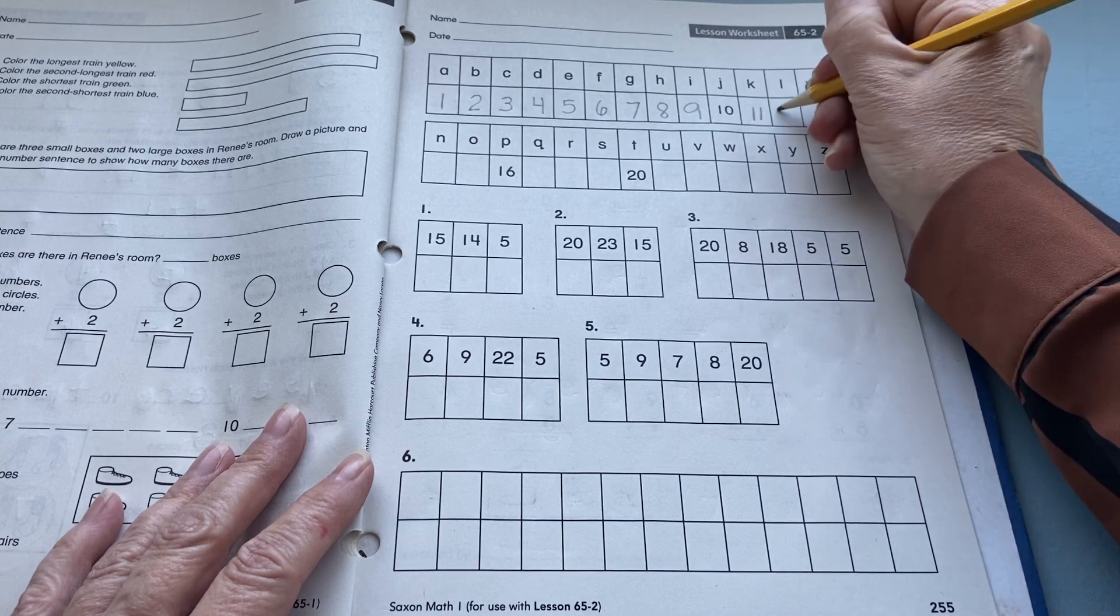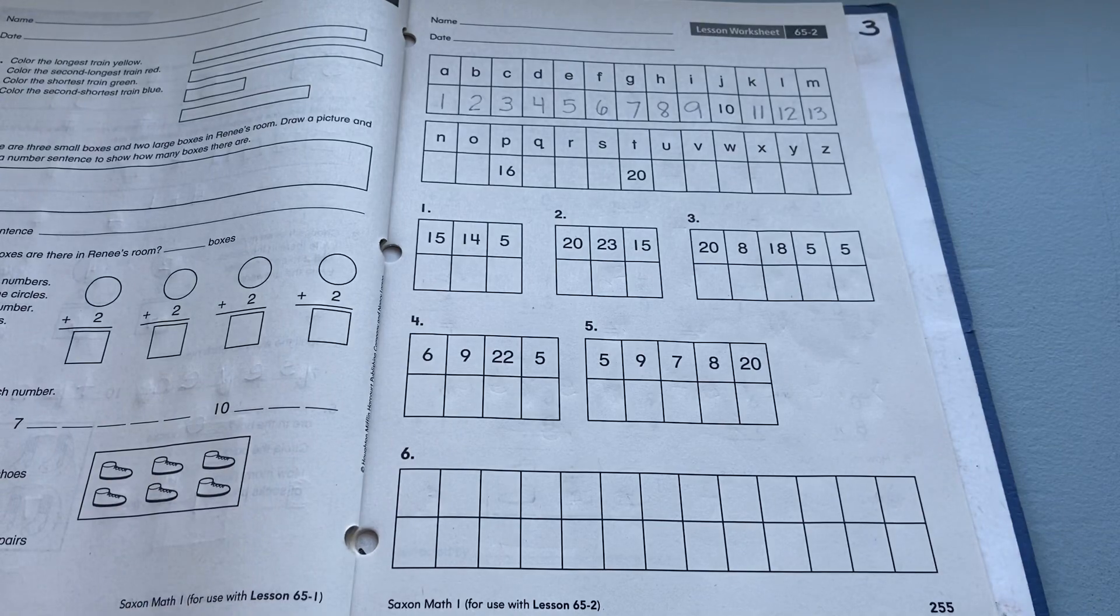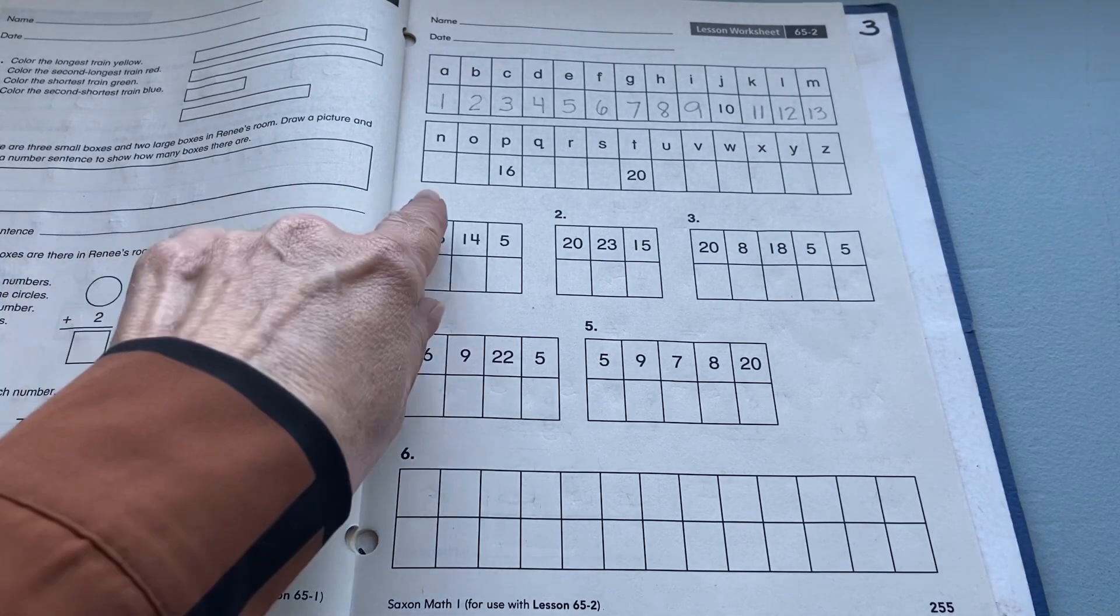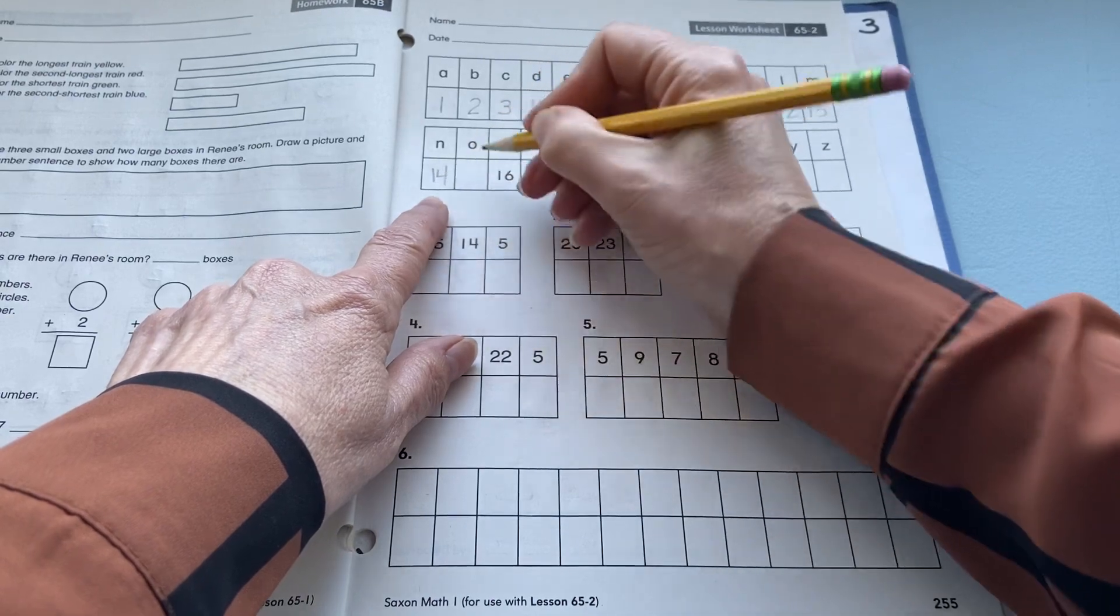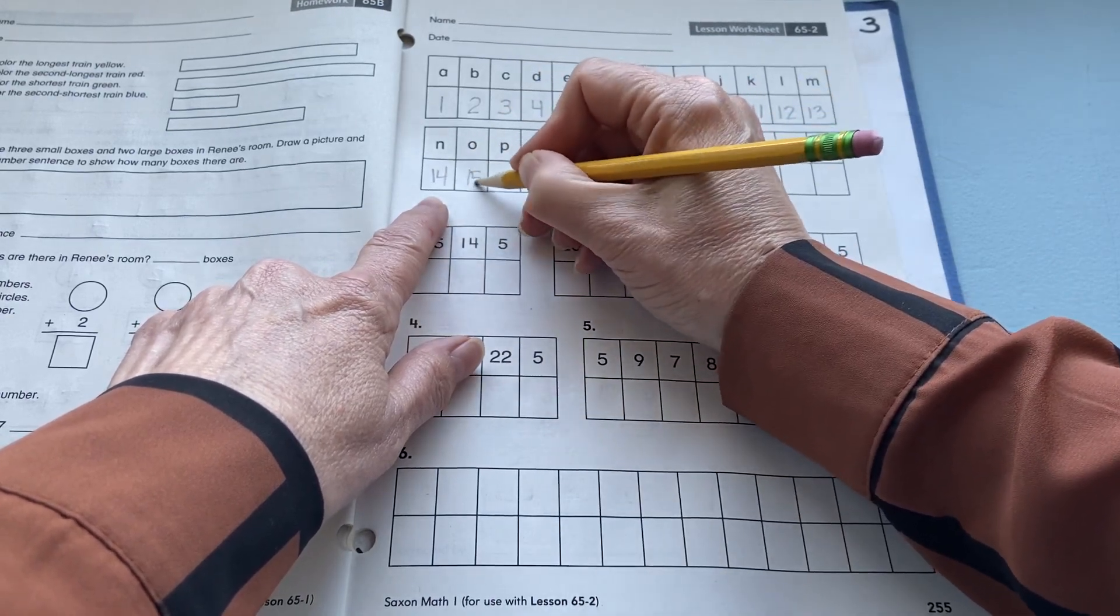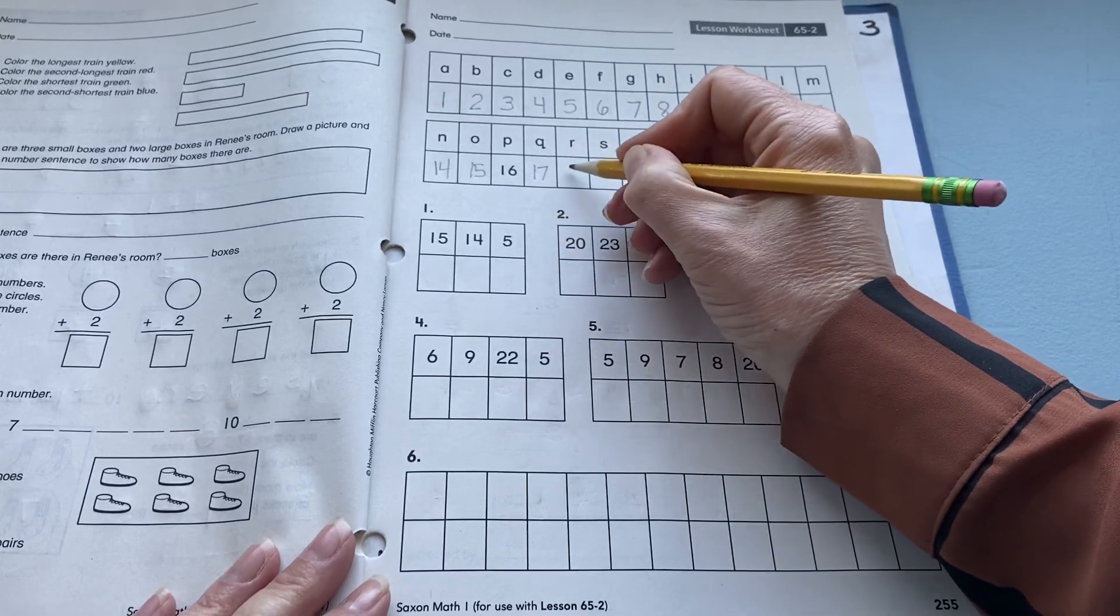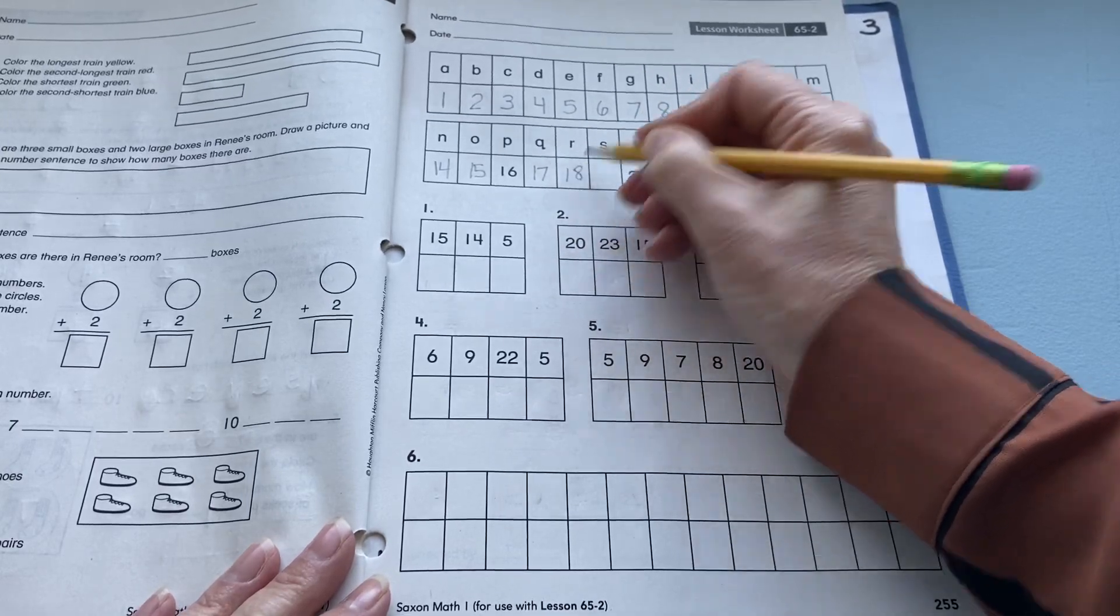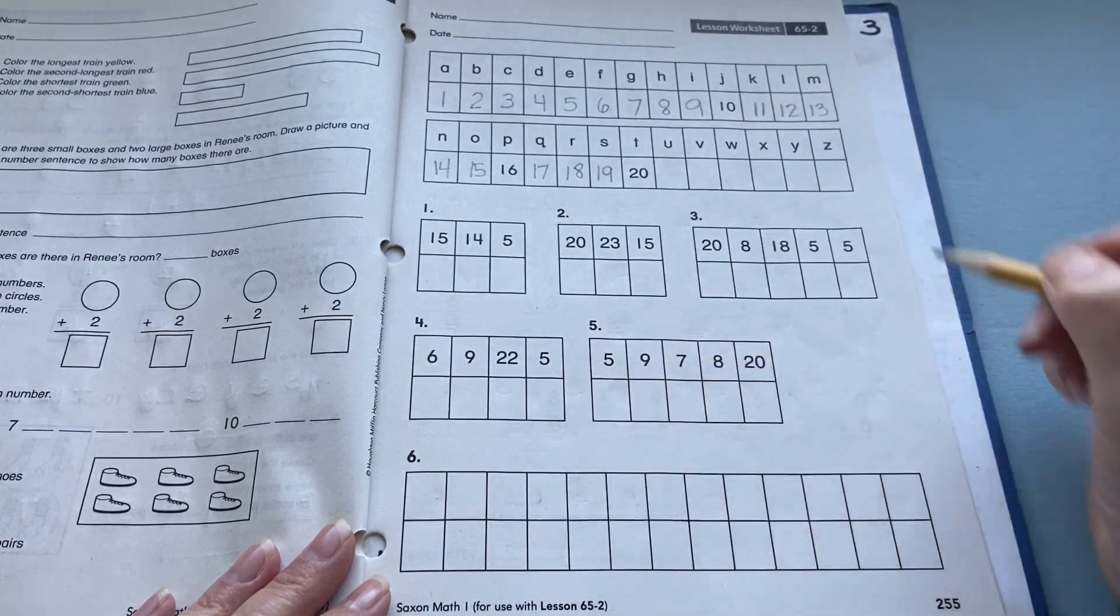11, 12, 13. Okay, I'm going to continue down here, continue on from 13, so we have to write 14, 15, 16, 17, 18, 19, 20. Okay.